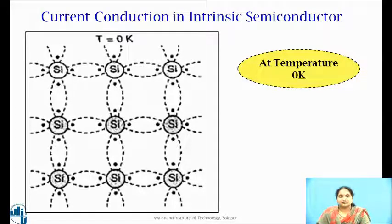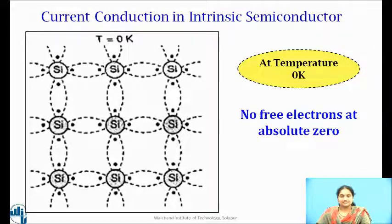All the valence electrons are locked in covalent bonds as we can see in the figure. And these valence electrons spend most of the time between neighbouring atoms. Since all the valence electrons are engaged in covalent bonds, the bonds are complete. The energy available at 0 Kelvin is not sufficient to break these covalent bonds. Therefore, there are no free electrons within the material at absolute zero.